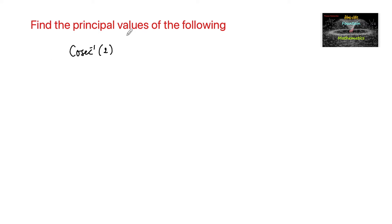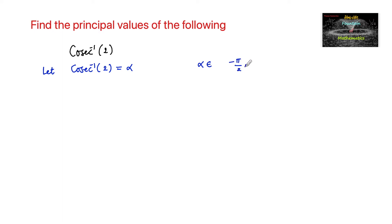Find the principal value of cosecant inverse of 2. Let us consider cosecant inverse of 2 is equal to alpha, where alpha must belong to minus pi by 2 to plus pi by 2, excluding 0 in between, which is the principal range of the cosecant inverse function.